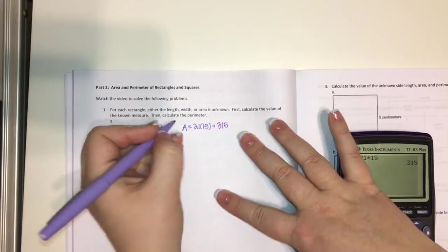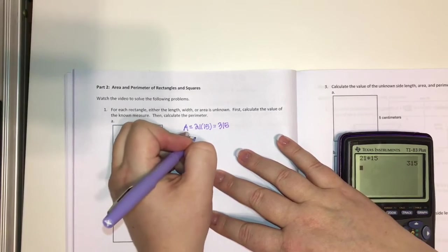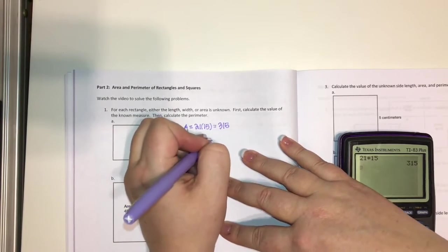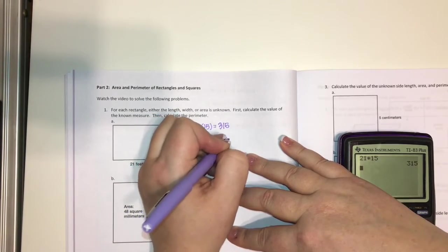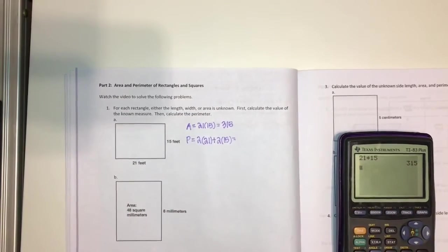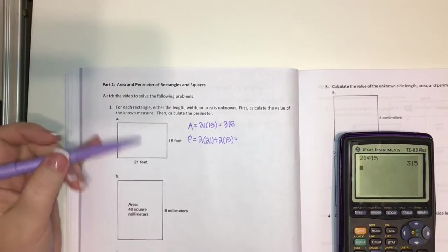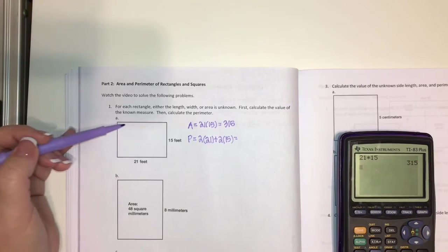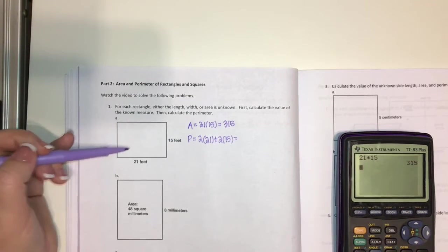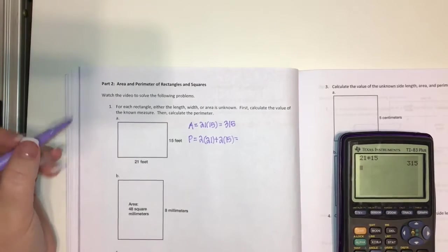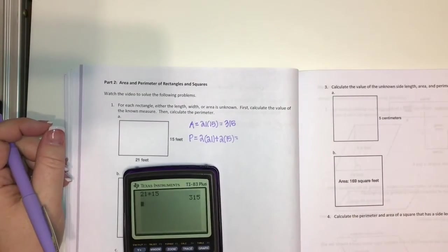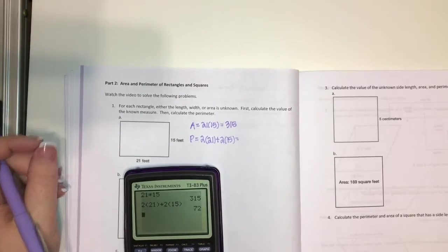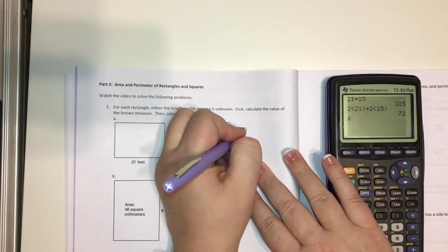And then to find the perimeter, we're going to do 2 times 21 plus 2 times 15. And if you think about that, that makes sense. Because the perimeter is all the way around. So if you think of this like a building, and we're walking 21 feet this way, 15 feet this way, 21 feet this way, and then 15 feet this way. We walked two sets of 21 and two sets of 15. So if we stick this in our calculator, 2 times 21 plus 2 times 15, you get 72. The perimeter here would be 72.